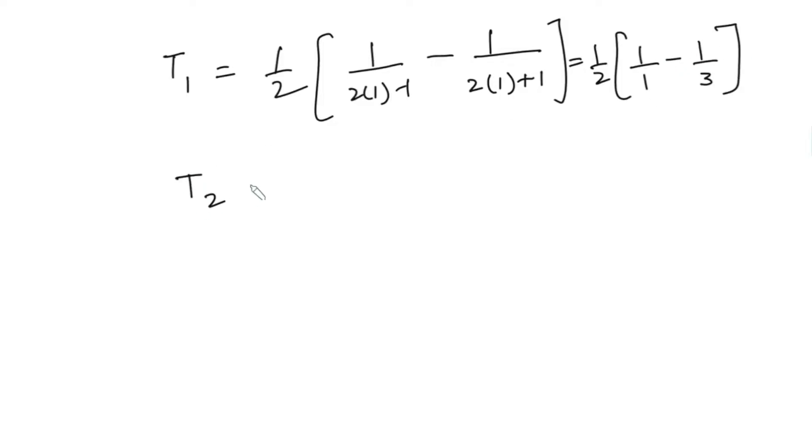And if we find T2, that will be 1/2. Again, now we will substitute 2 here and 2 here, so we have 1/3 - 1/5. And then T3 will be equal to 1/2 times (1/5 - 1/7), and so on.